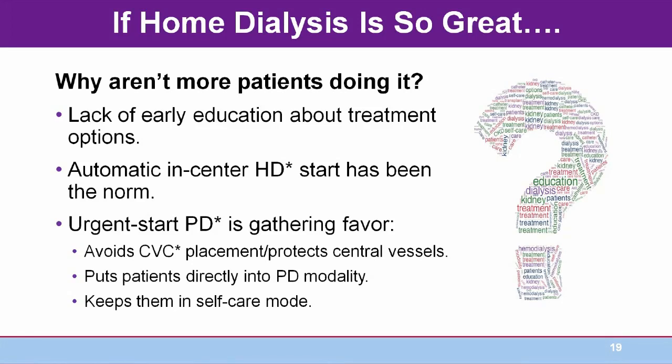These patients must start dialysis urgently when they are too sick to care for themselves, and it has become customary to start them on assisted in-center hemodialysis. Many patients, upon seeing the complexity of in-center hemodialysis, don't realize that they could be trained to perform hemodialysis or PD at home. Patients will not know unless they are educated. Recently, urgent start peritoneal dialysis was introduced in response to the trend that advanced CKD patients requiring imminent dialysis could not do PD because of the waiting time needed between catheter placement and use.